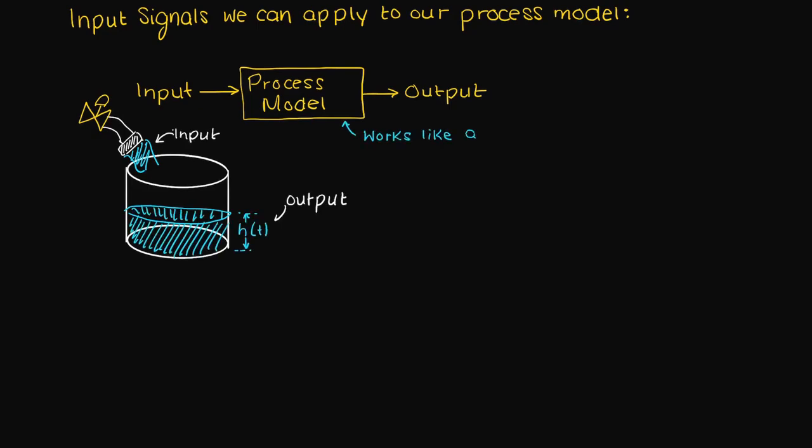The block that is the process model is essentially the same thing as a function in math. It provides us one output for a given input. Therefore it is essentially just an input to output relationship.